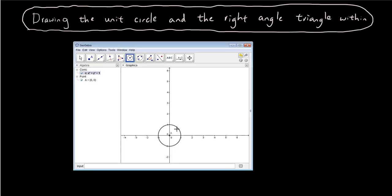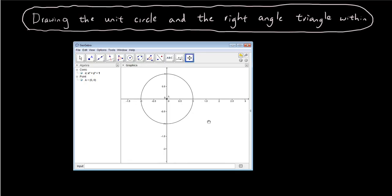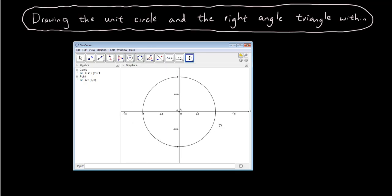You can see that we have a really small circle. So what I'm going to do is use the Move Graphics View button. I'm going to drag it to the middle of the screen and zoom in onto it so it's a decent size.